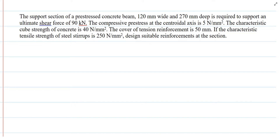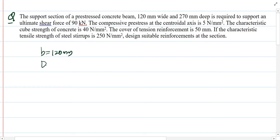Welcome back students. Today's class we are going to see the design for shear in a prestressed concrete member. The question states: the support section of a prestressed concrete member is 120 mm wide and 270 mm deep, required to support an ultimate shear force of 90 kN. The width of the section is 120 mm and the total depth is 270 mm.